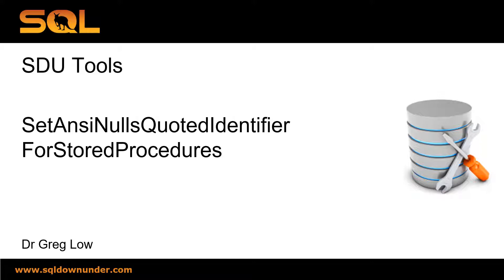In a SQL Server session, you can configure how you want nulls to work. There's an ANSI Nulls setting, and there's also how you want quoted identifiers to work — there's a setting for that. Unfortunately, these two settings are things that often get misconfigured when people are configuring their sessions, particularly if they're creating objects in a database. You'll find tables that have the ANSI Nulls settings on or off when they should be on, and you can find the same thing with quoted identifiers.